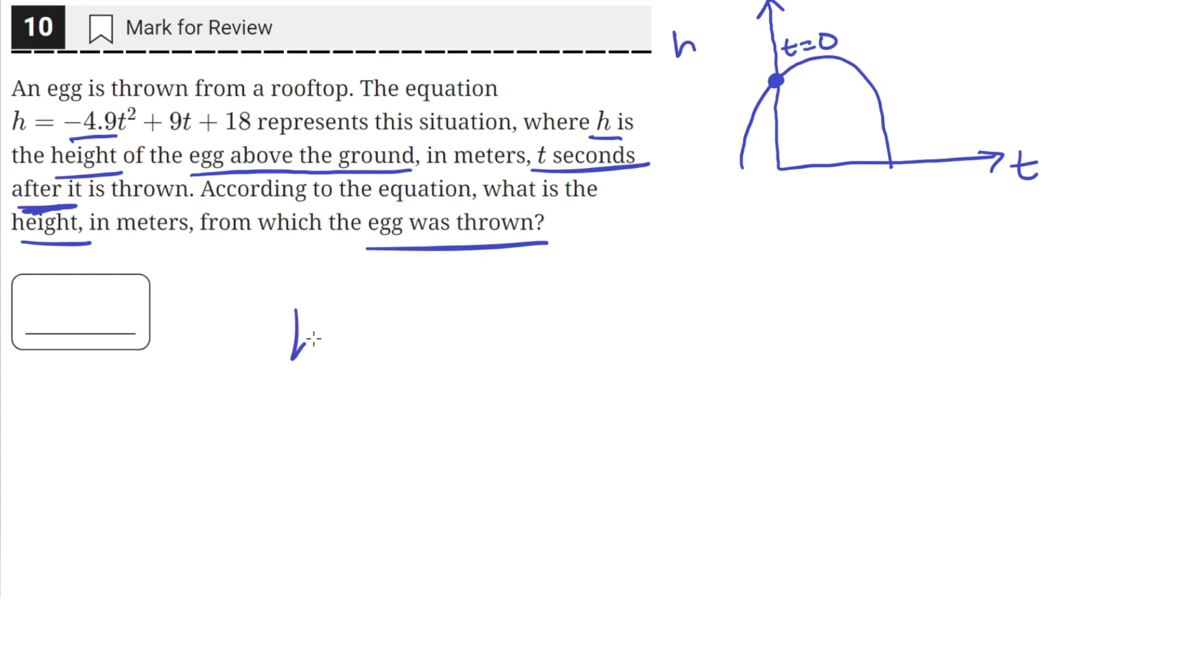When t equals zero, we just need to find the value of h when t equals zero. So h of zero equals negative 4.9 times 0 squared plus 9 times 0 plus 18.